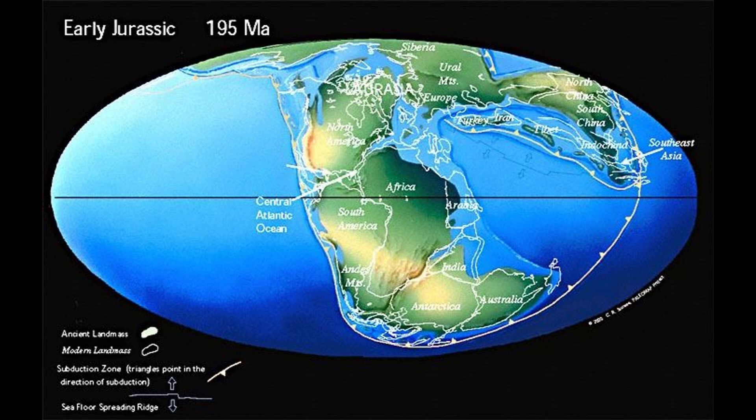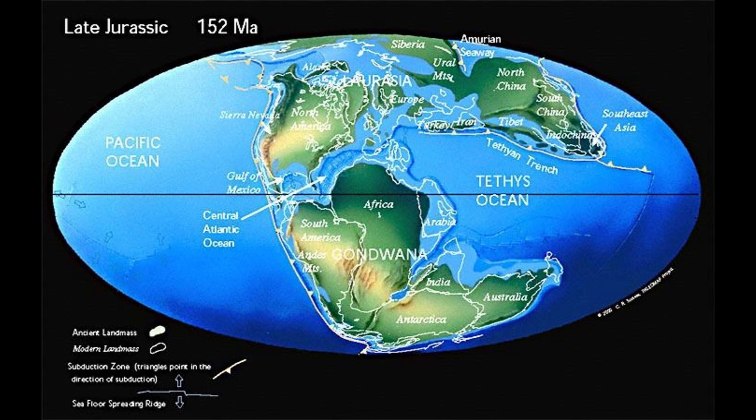By the early Jurassic, south-central Asia had assembled. A wide Tethys Ocean separated the northern continents from Gondwana. Though Pangaea was intact, the first rumblings of continental breakup could be heard. The supercontinent of Pangaea began to break apart in the middle Jurassic.